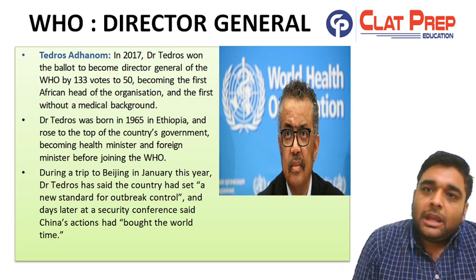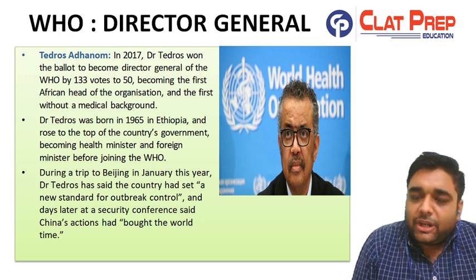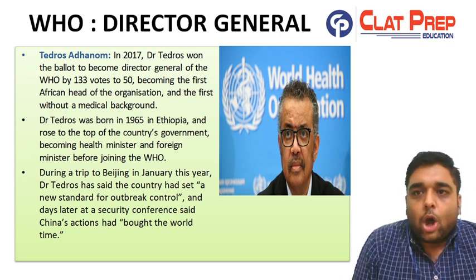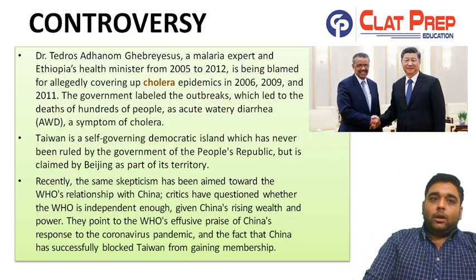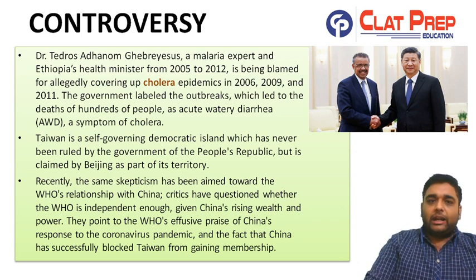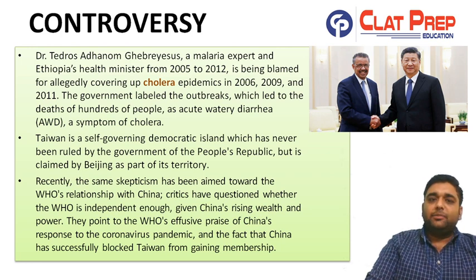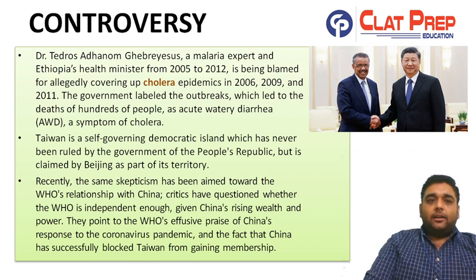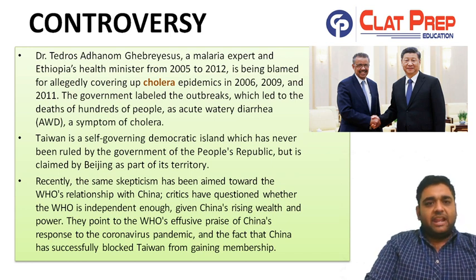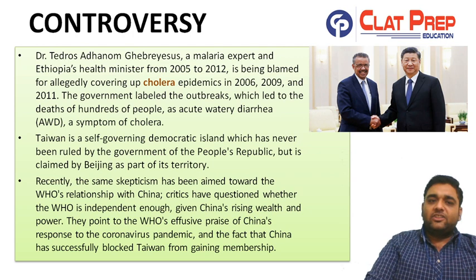These are the major allegations on Director General Dr. Tedros. The controversy related to him is that he was Ethiopia's health minister from 2005 to 2012. Allegations are that during his tenure he covered cholera epidemics that happened in Ethiopia in 2006, 2009, and 2011. The government labeled the outbreaks — which led to the deaths of hundreds of people — as acute watery diarrhea, a symptom of cholera, rather than cholera itself.